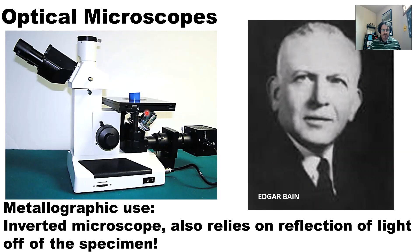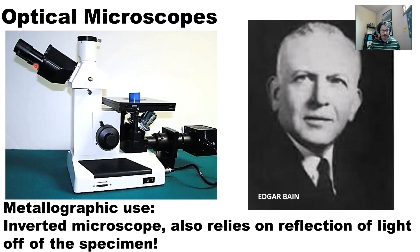The inverted microscope has a rotating carousel of objective lenses and still has your eyepiece. This is an interesting microscope - you can put a digital camera in here so you can capture images. You have your specimen stage, objectives, and eyepiece, and the total magnification is the magnification of your objective times the magnification of your eyepiece. So if the objective is 20x and the eyepiece is 10x, that's 200x total.